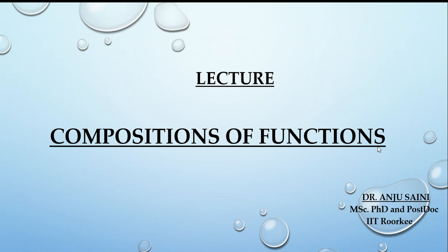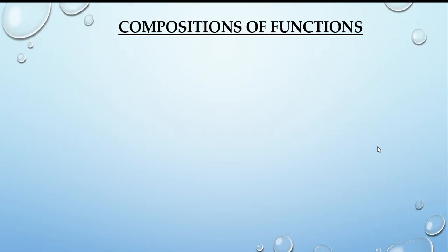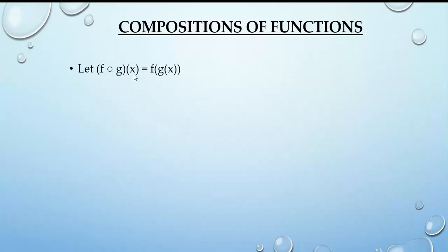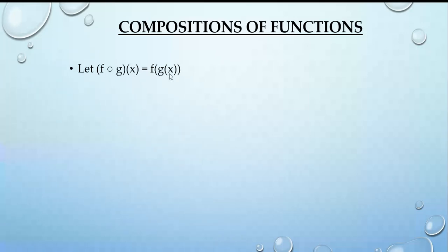Welcome to the next lecture on compositions of functions. If we have two functions f and g, we denote the composition as f composition g, written as fog. To calculate f composition g of x, written as f(g(x)), the value g(x) becomes the domain input for the function f.